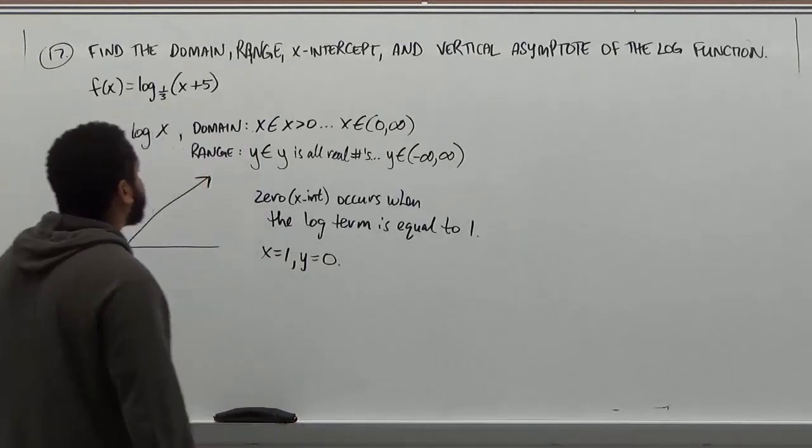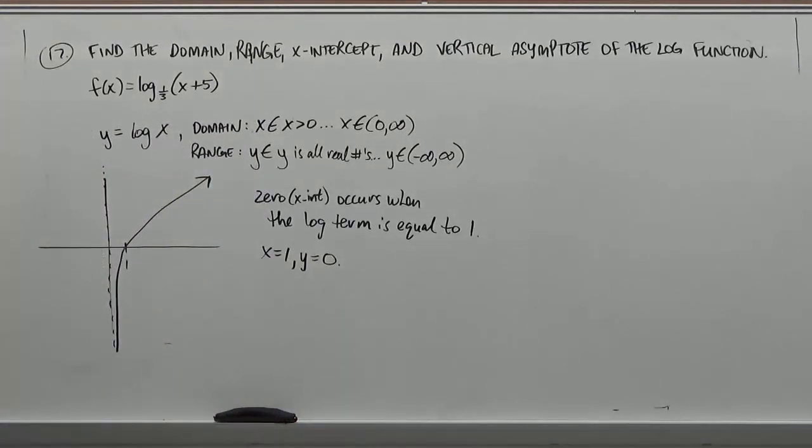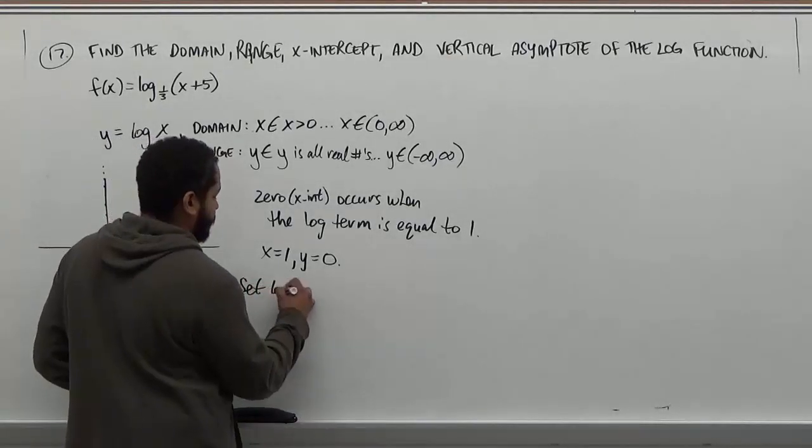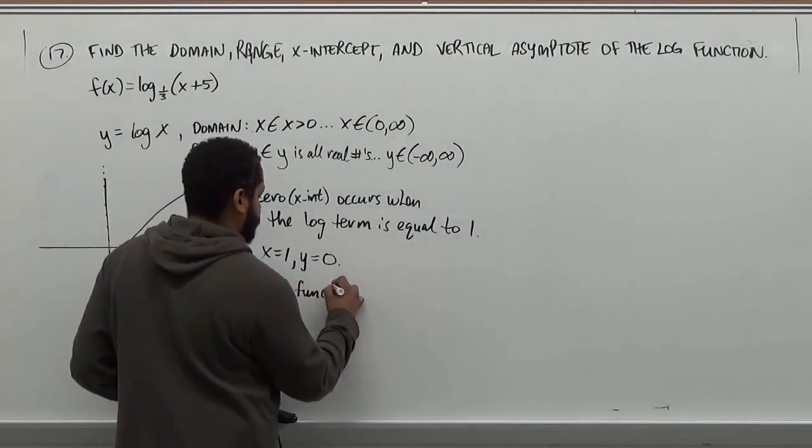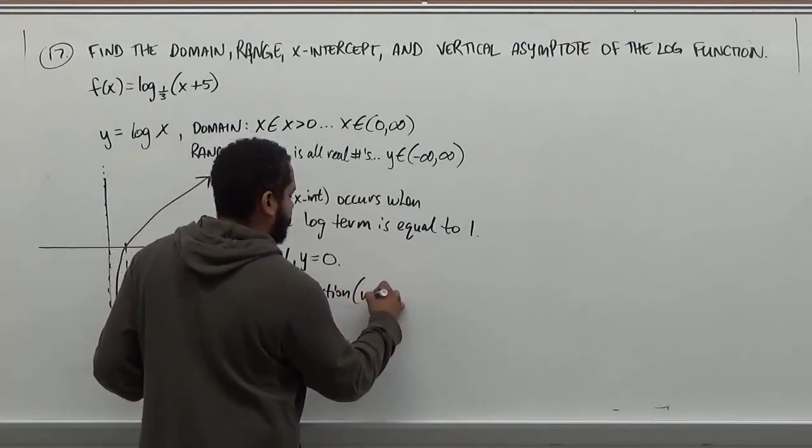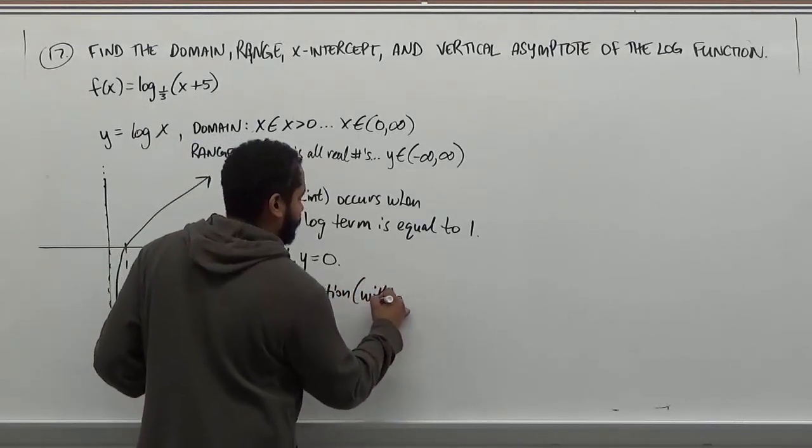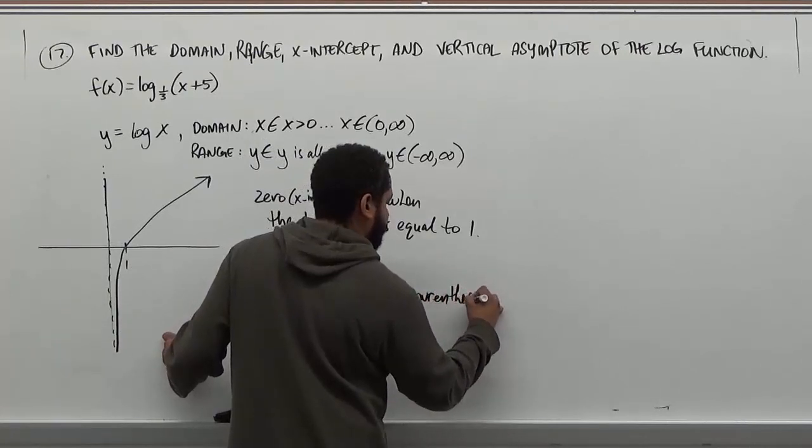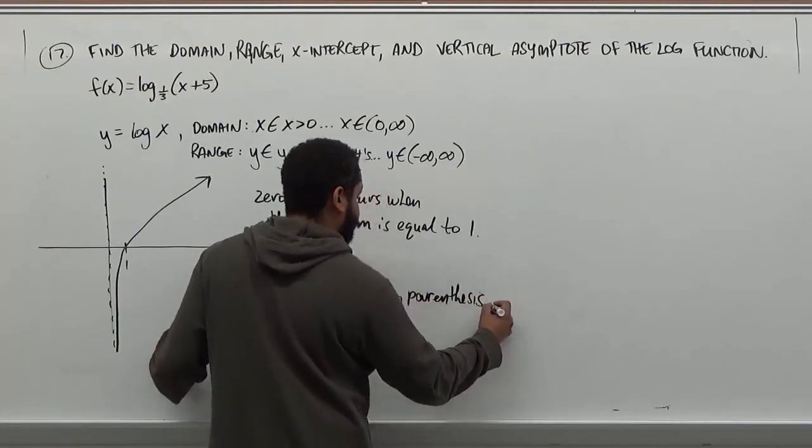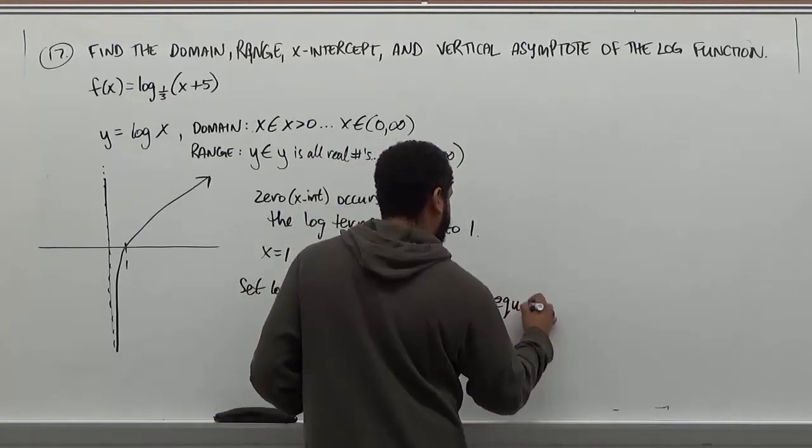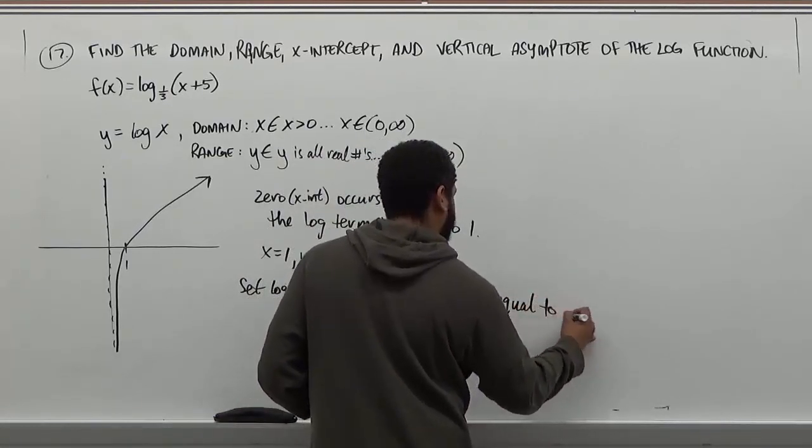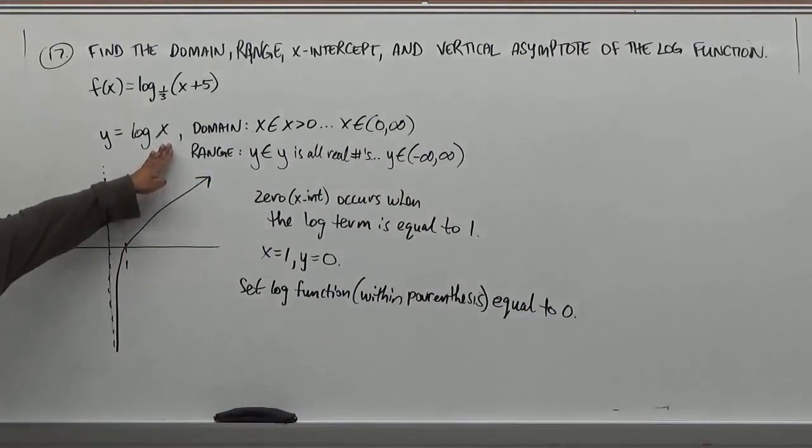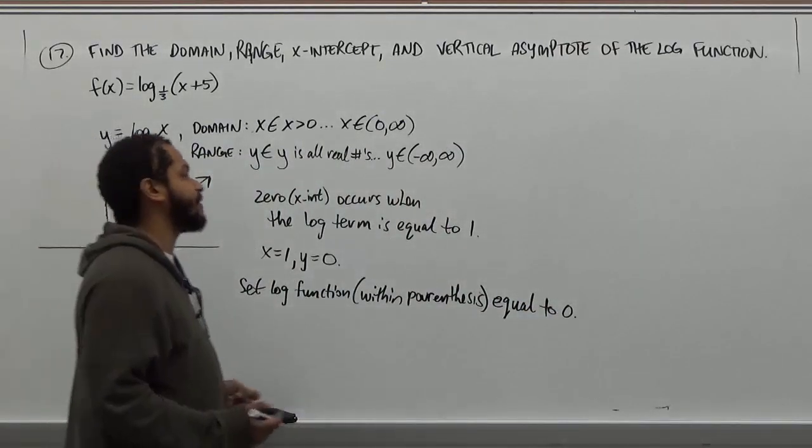And finally, the vertical asymptote is based on the domain. We always set the log function within the parentheses equal to zero. Whenever the term of the logarithm is equal to zero, you have what we call a vertical asymptote. So let's use these four components to solve our four components of what we're doing.